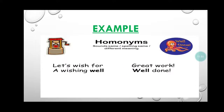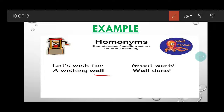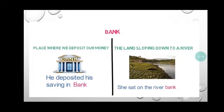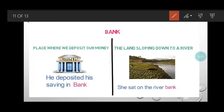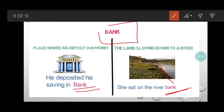Homonyms have the same spelling and same pronunciation but different meanings. The first example is 'well': one well is a water well — a structure for drawing water — and the second well is used when we appreciate somebody's work: 'well done.' Next is 'bank': the first meaning is a place where we deposit or withdraw money. The second meaning, from social studies, is the land sloping down to a river — that slope is also called a bank.